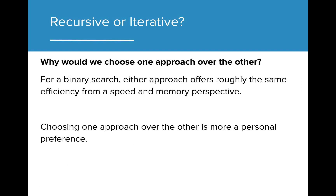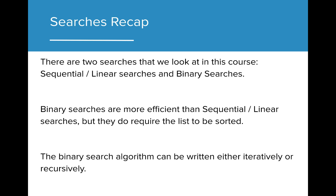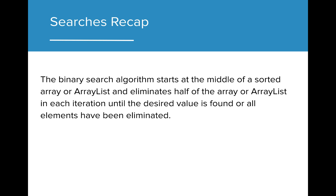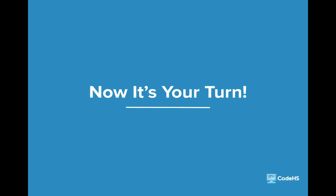Why would we choose one approach over the other? Well, for a binary search, either approach offers roughly the same efficiency from a speed and memory perspective. In this lesson, we took a look at two different search algorithms: sequential or linear searches and binary searches. Binary searches can be significantly more efficient; however, they do require our lists to be sorted. A binary search can be done using either an iterative approach or a recursive approach. Binary searches eliminate half of the list each time through by testing the midpoint and adjusting the search parameters accordingly. Now that you've practiced using recursive searching, let's get some practice using it in the editor.